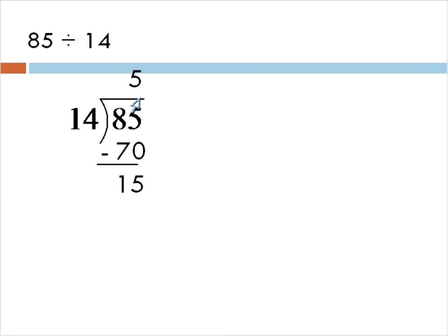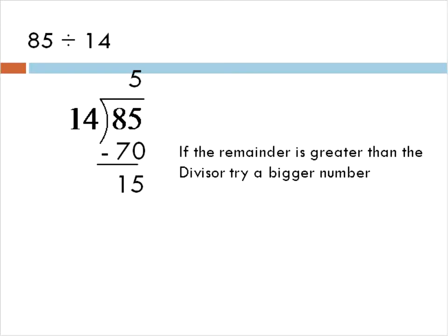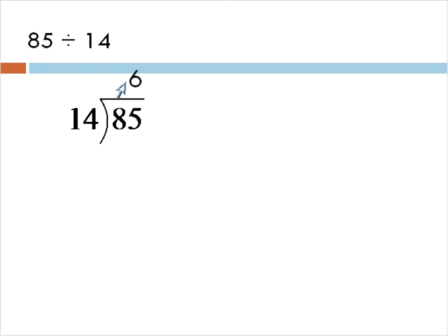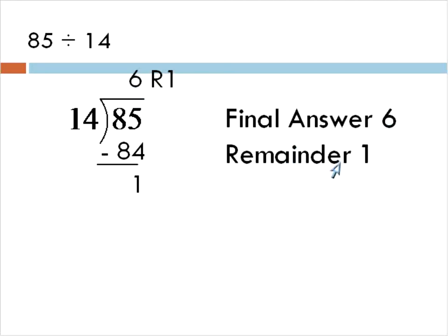We're going to back it up and try guessing one number bigger: 6. How many times does 14 go into 85? We've guessed 6 times. 6 times 14 gives us 84. When we subtract, we end up with just 1 at the end. This is really good because having 1 there means that 14 will go into 85 six times, with just 1 left over. If we're writing things with a remainder, that would be our answer: 6 remainder 1, or written as 6 R1. That would be our final answer if we're looking for a solution with a remainder.